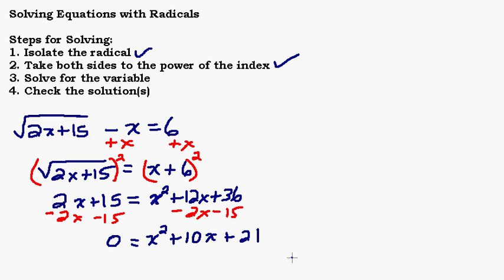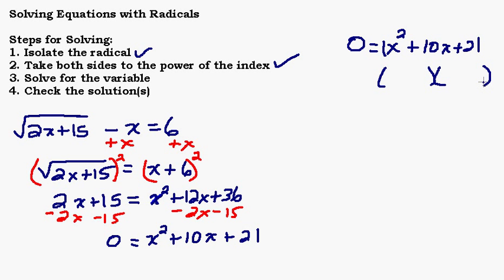We have 0 equals x squared plus 10x plus 21. To factor this, since the coefficient on x squared is 1, we simply ask: are there two numbers that multiply to 21 and add to 10? The answer is yes — positive 7 and positive 3. We put an x in each factor, giving us x plus 7 times x plus 3. If you FOIL this out you get x squared plus 3x plus 7x, which gives 10x plus 21. That works.